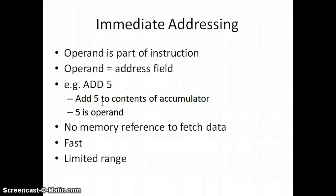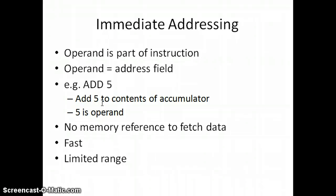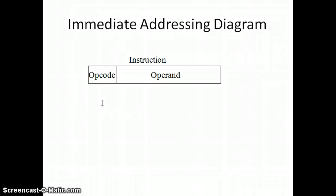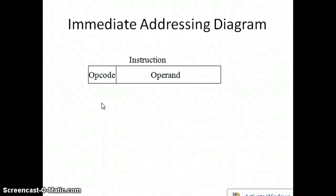However, we can't access more operands, giving a disadvantage or demerit called limited range — we can give only a limited range of instructions. Consider a diagram of an instruction or operate instruction format: there will be an opcode for immediate addressing mode and comparatively an operand. The operand and opcode are directly specified together.